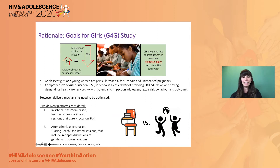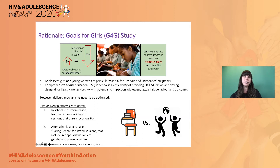There is extensive evidence that adolescent girls and young women are particularly at risk for HIV, STIs, and unintended pregnancy. There's also evidence that spending additional years in secondary school is protective and reduces the risk of HIV infection. There's also evidence that comprehensive sexuality programs that address gender and power are five times more likely to achieve SRH outcomes.